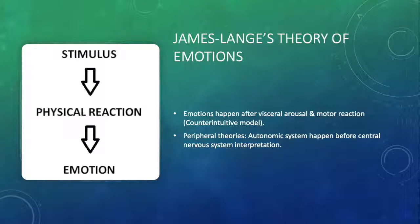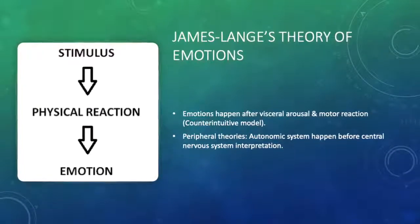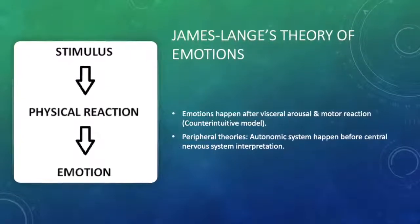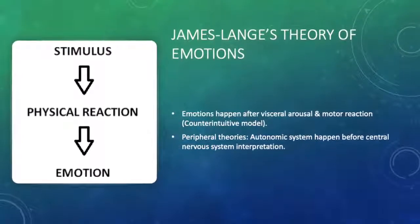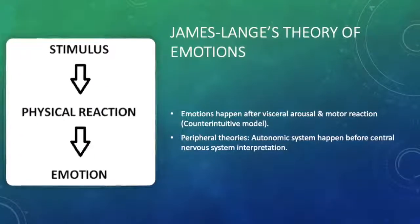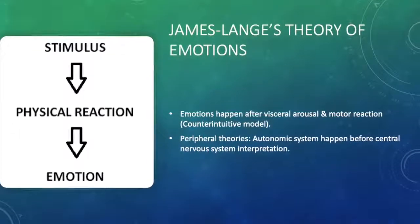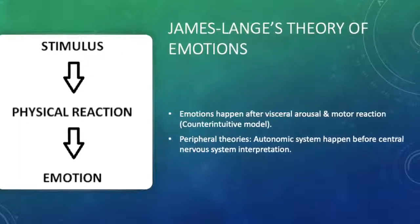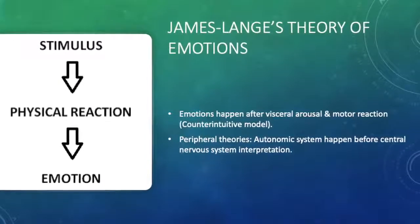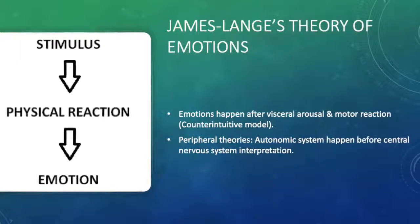James-Lange's theory of emotions: according to this theory, emotions happen after visceral arousal and motor reaction. This is a counterintuitive model because it states that emotions occur at the end. Peripheral theories include how the autonomic system is activated before the central nervous system is able to interpret what is going on.